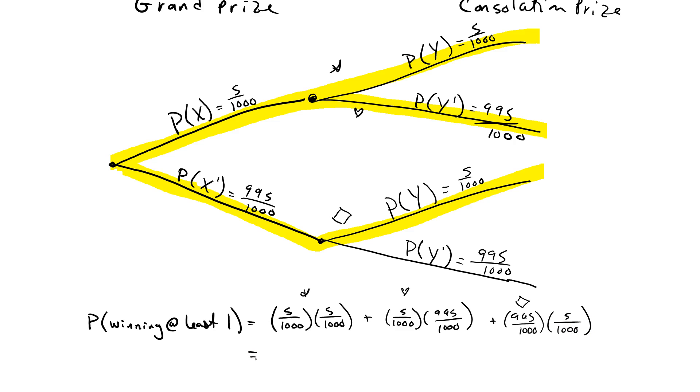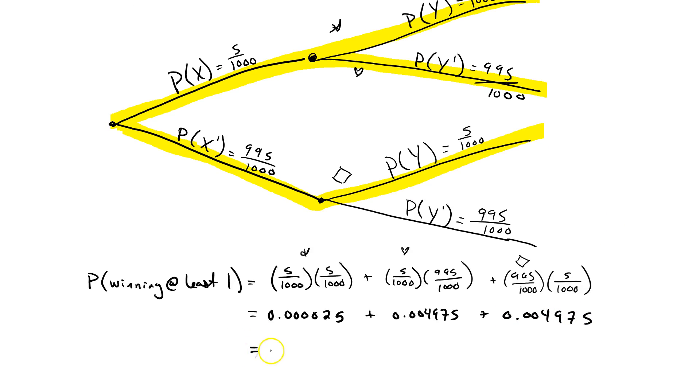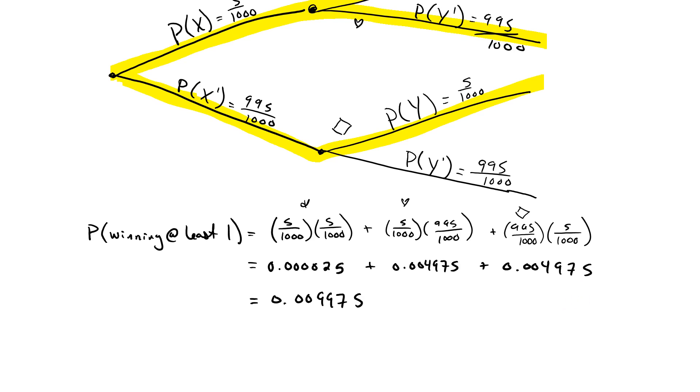So, if I multiply this together, put this in my calculator, it's going to be 0.000025 plus 0.004975 plus, and actually, these two are the exact same, 0.004975. This guy right here is only 0.009975. So, you're noticing that I'm not rounding until the end, right? I'm holding all the possible decimal places as much as I can.